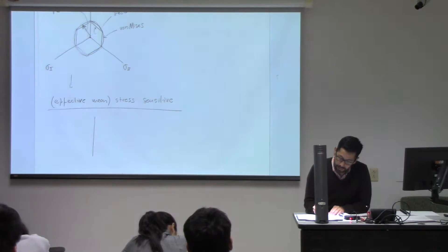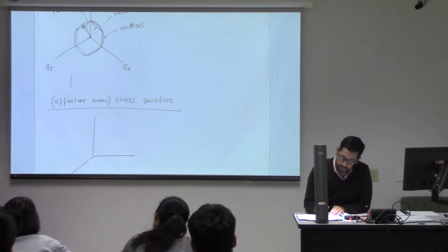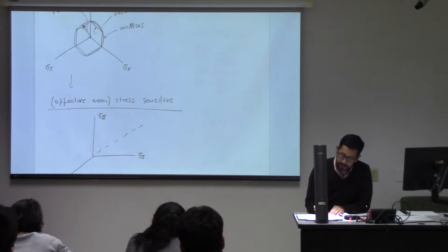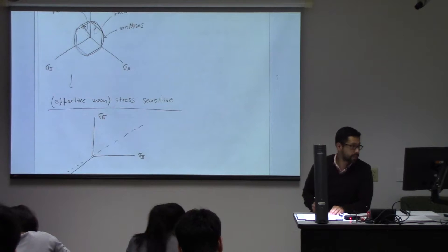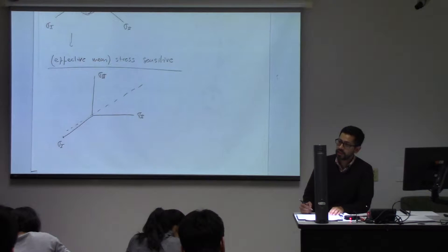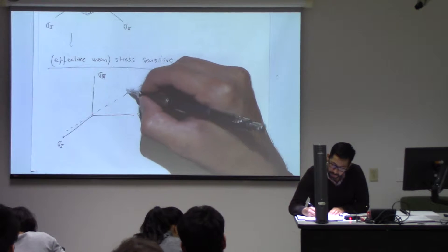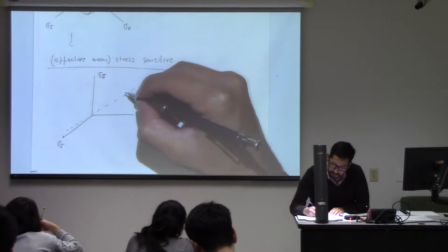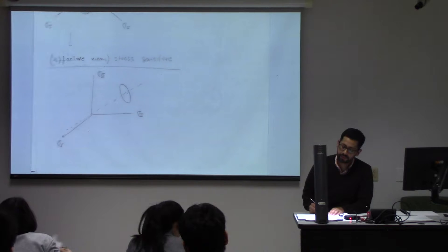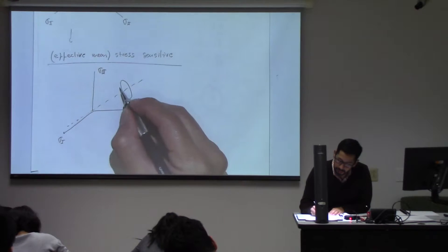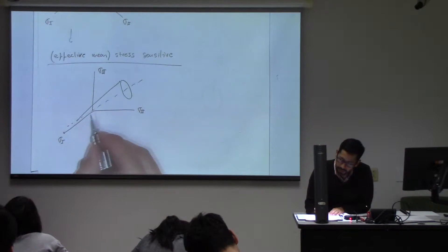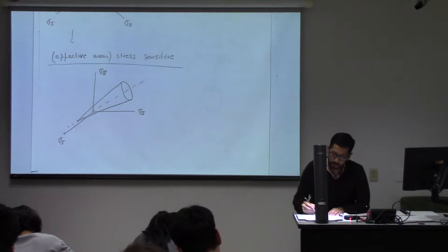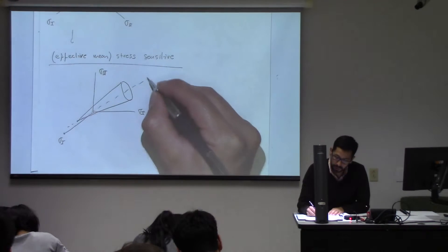Let's draw in three dimensions the space of principal stresses. If we have a hydrostatic axis, a stress-sensitive criterion is one in which the value of J2 varies as we move along the surface. So probably we can have a circle again, but the radius of that circle is going to vary as we vary the mean stress. The failure surface of such a criterion is going to look like a cone, where the radius depends on where you are along the hydrostatic axis.